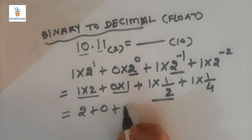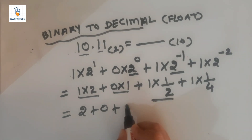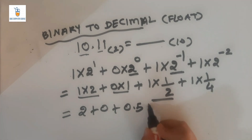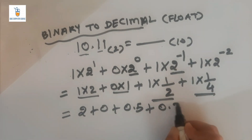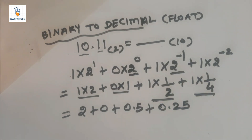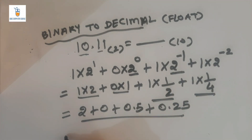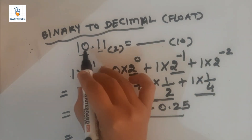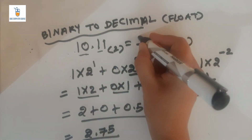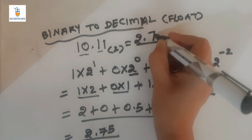Now, 1 into 2 is 2; 0 into anything is 0. Then 1 into 1 by 2 is 1 by 2, which in decimal form is 0.5. And 1 into 1 by 4 equals 0.25 in decimal form. Adding all these values: 2 plus 0 plus 0.5 plus 0.25 gives 2.75. Therefore, 10.11 to the base 2 is equal to 2.75 to the base 10.